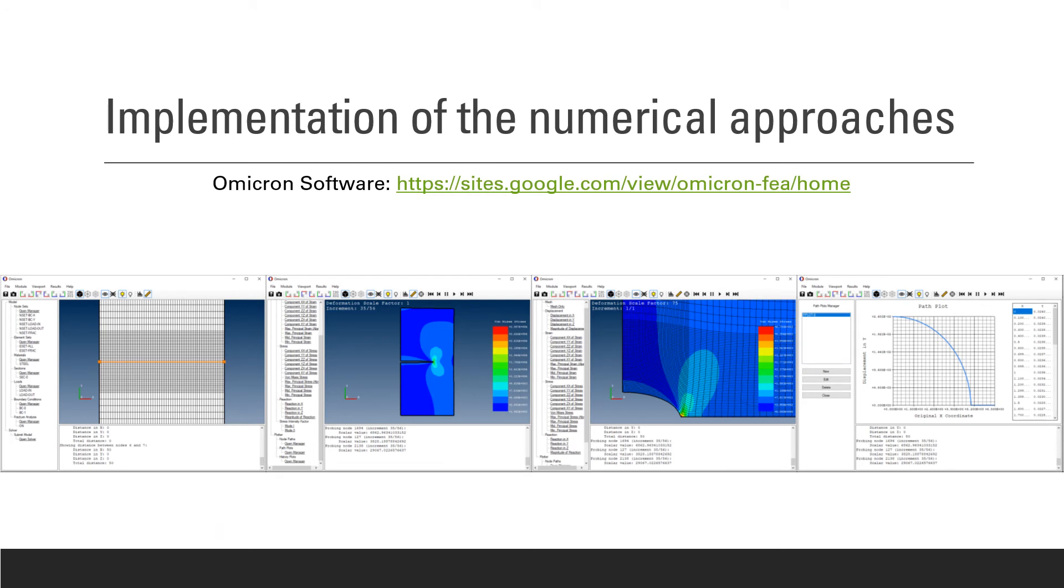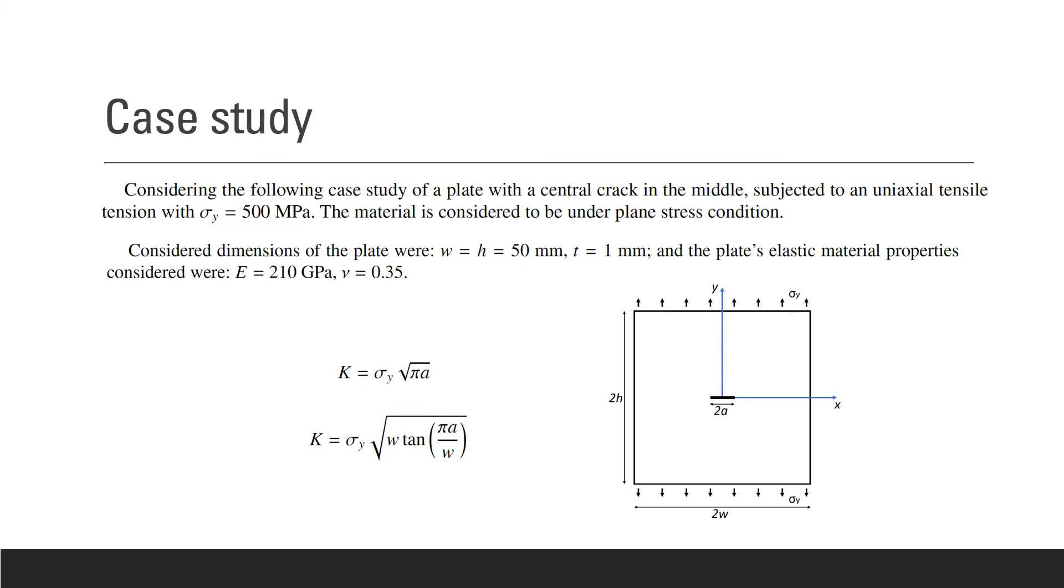So the presented procedures to determine stress intensity factors will now be implemented in a new software for finite element analysis. This software is called Omicron. In order to verify that the software is correctly outputting the stress intensity factor, a simple problem or case study was taken into account. This is just a simple plate subjected to a uniaxial tensile test. So for this problem, the analytical solution is already well known and it's shown here on top.